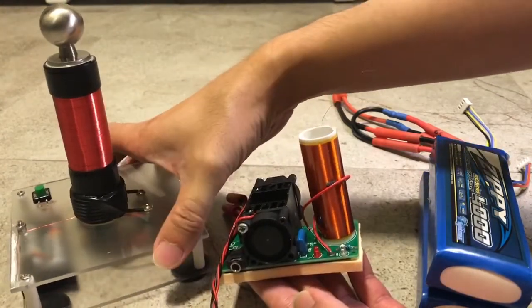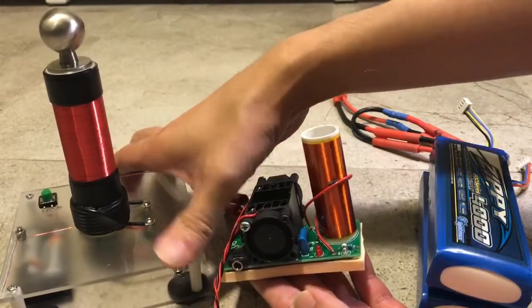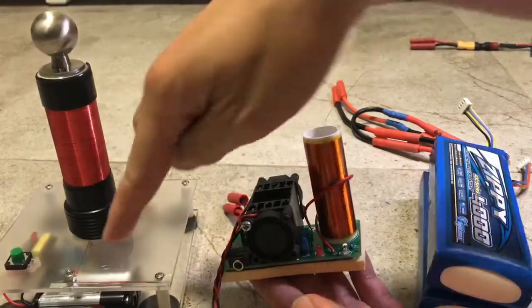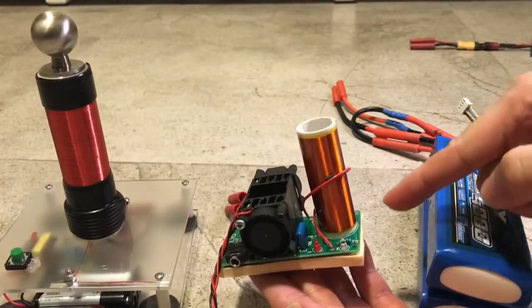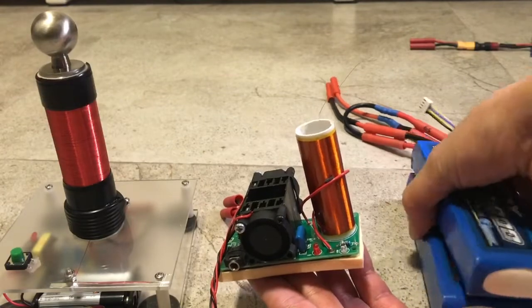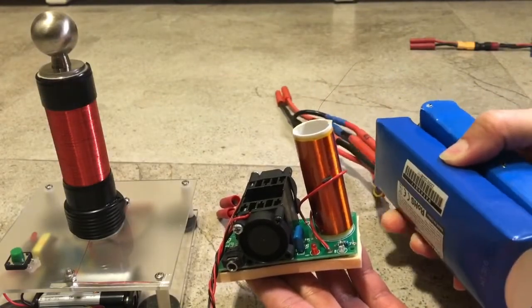This DIY Tesla coil is pretty much portable as you can see here. The 3V power supply are just two AA batteries.